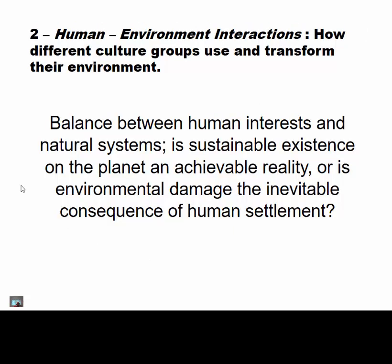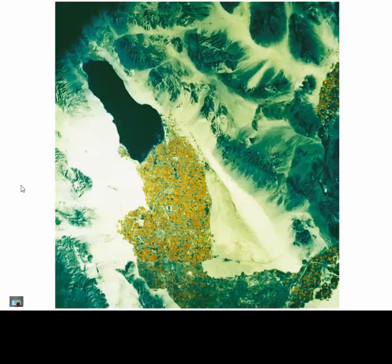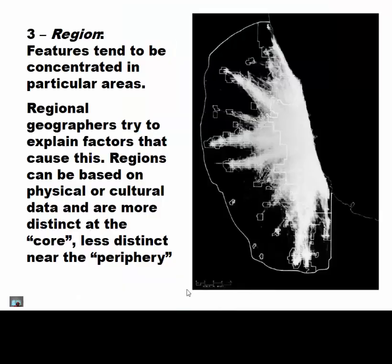We also have human geography, or human-environment interactions — basically, what are all the things that people do to affect the earth? Is environmental damage an inevitable consequence of human settlement? You can see something in the ocean here that obviously isn't just natural. So how is this going to affect future generations of people living in this area?